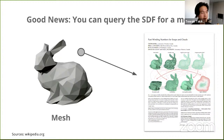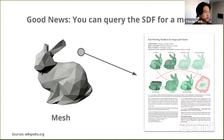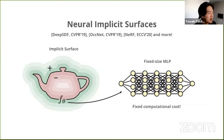Fortunately, there are algorithms where you can take a mesh and for a given point calculate the signed distance function by running a specialized algorithm. So we have the inputs and outputs, but not the function that encodes them. When you have an unknown function of input and output, the modern trend is to neuralify it and use machine learning to learn that function. This is exactly what previous papers like DeepSDF and Occupancy Networks do — you take samples of XYZ points and their corresponding signed distance values, and fit a parameterized fixed-size multilayer perceptron.